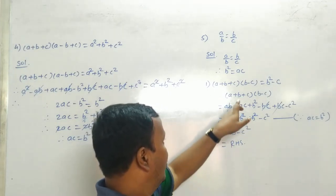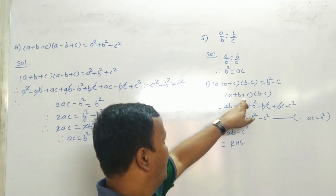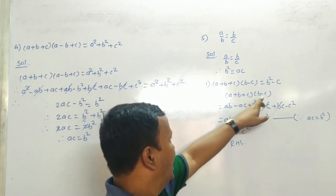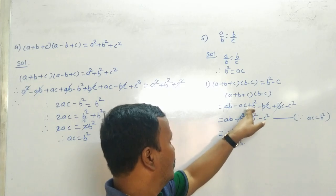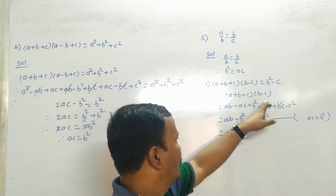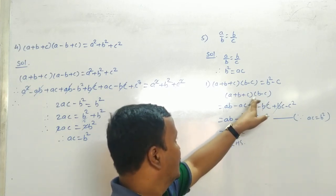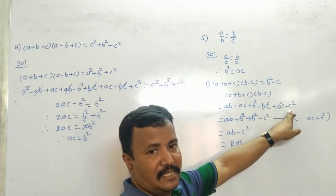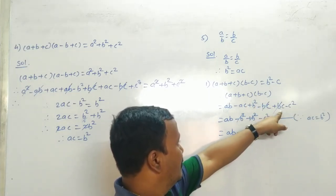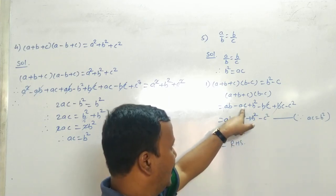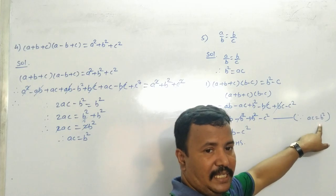पहले LHS को solve करते हैं: A plus B plus C into B minus C. A into B = AB, A into C = minus AC. B into B = B square, B into C = minus BC. C into B = plus BC, C into C = minus C square. BC और minus BC cut हो जाते हैं।